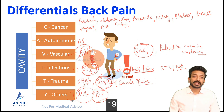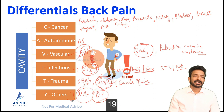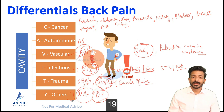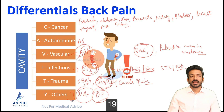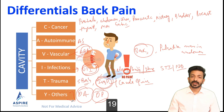For osteoporosis, ask about risk factors: age, female sex, menopause, low dairy intake, long-term steroid use — for example in giant cell arteritis or polymyalgia rheumatica. You need to take history accordingly, noting whether it is a chronic or acute history, how severe the pain is, working conditions, and any associated cancer or infection symptoms to narrow down your differential.